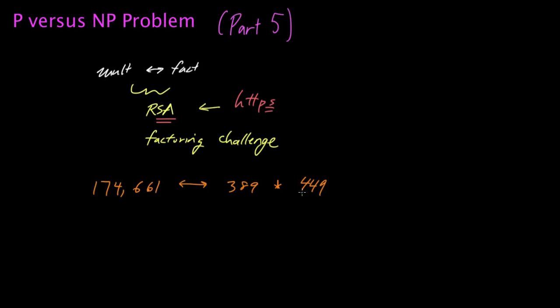And indeed, if you multiply 389 and 449 together, you'll notice that their product is equal to 174,661. And in fact, you don't even need a computer to verify this. If you just multiply these two by hand, you could fairly quickly tell that the answer was correct.